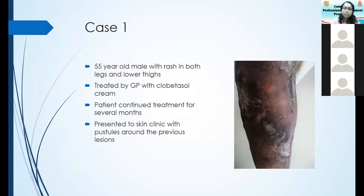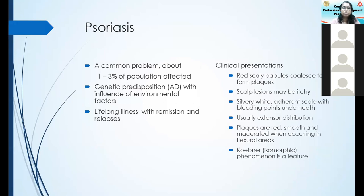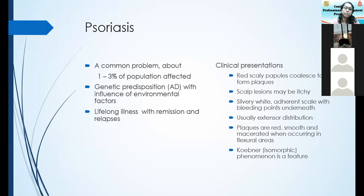Let's move on to a few important things about psoriasis. Psoriasis is common, affecting about one to three percent of the population. There is a genetic predisposition with autosomal dominant transmission, but there is a lot of influence from environmental factors.